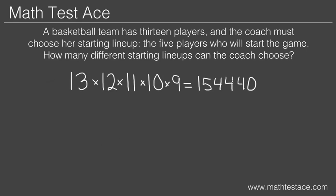But the order of the players doesn't matter, so we have to divide by the number of ways in which we could have chosen any particular group of 5 players. I explain more about this at MathTestAce.com. If you're watching on YouTube or Tumblr, there's a link to this lesson just below this video. So how many ways could we have chosen any 5 particular players?